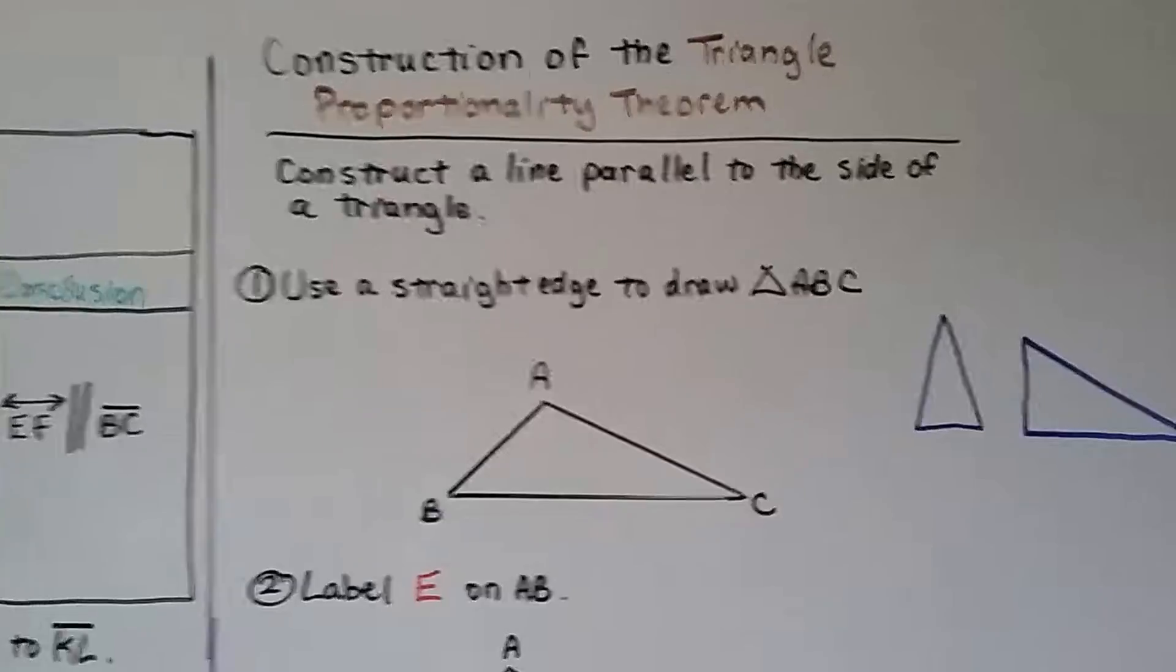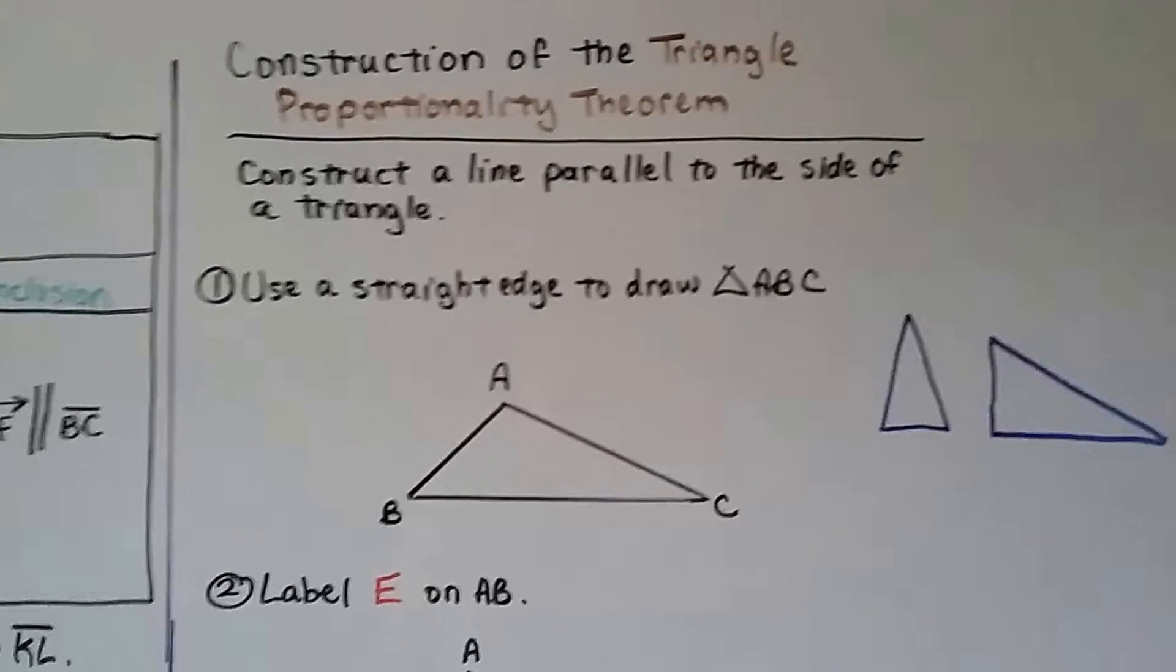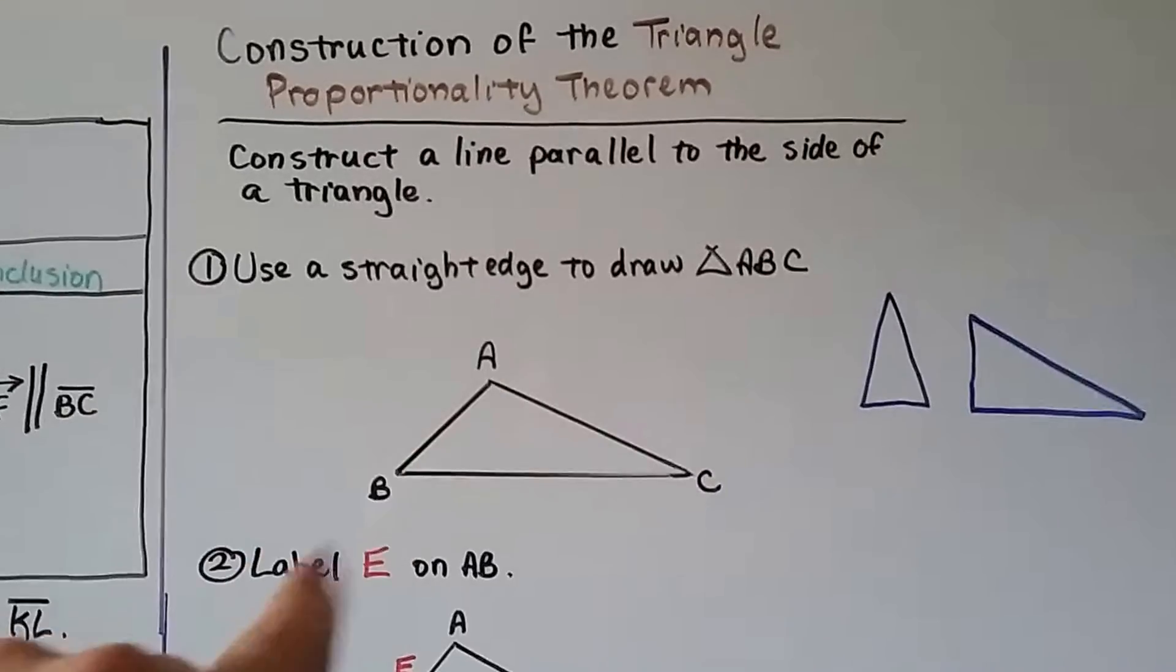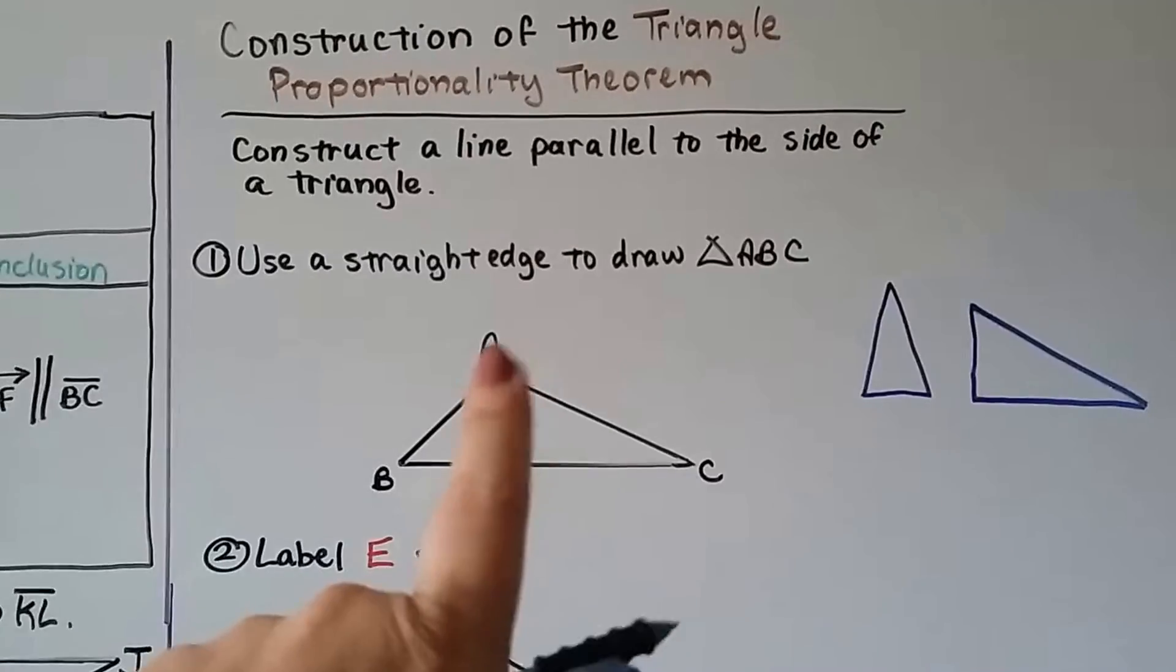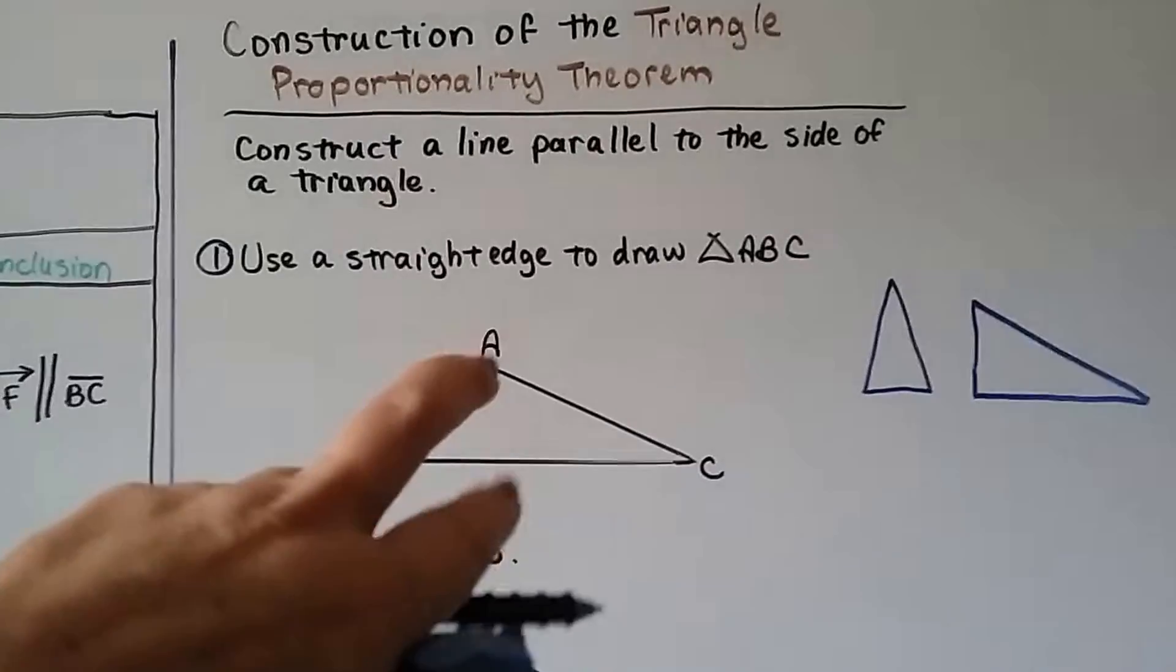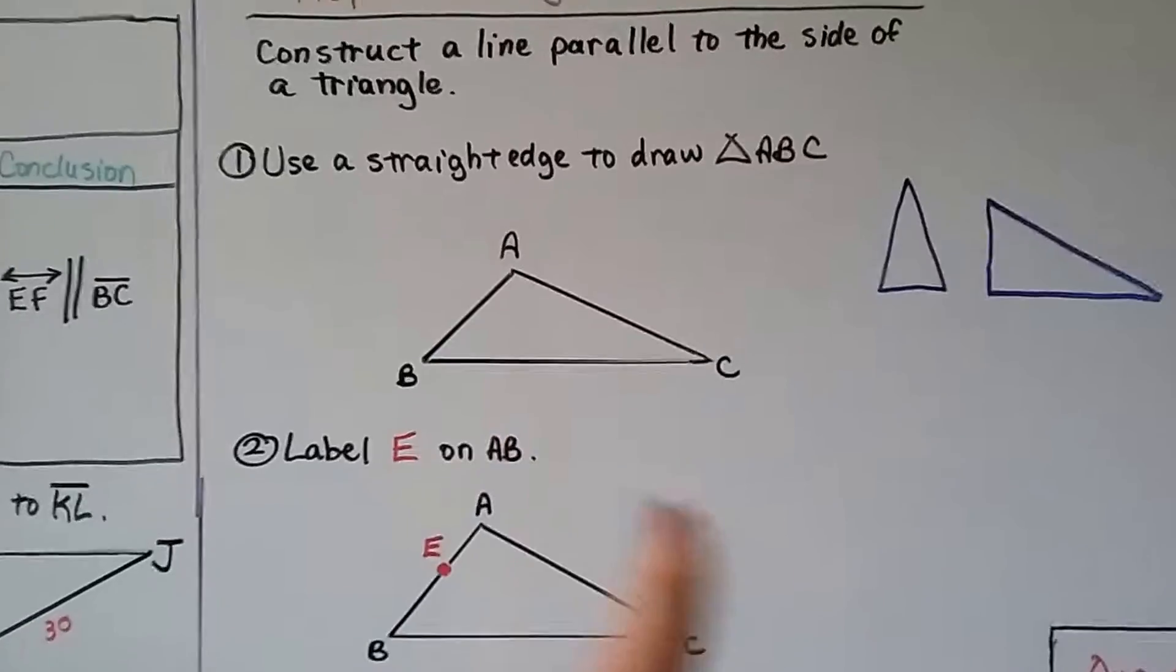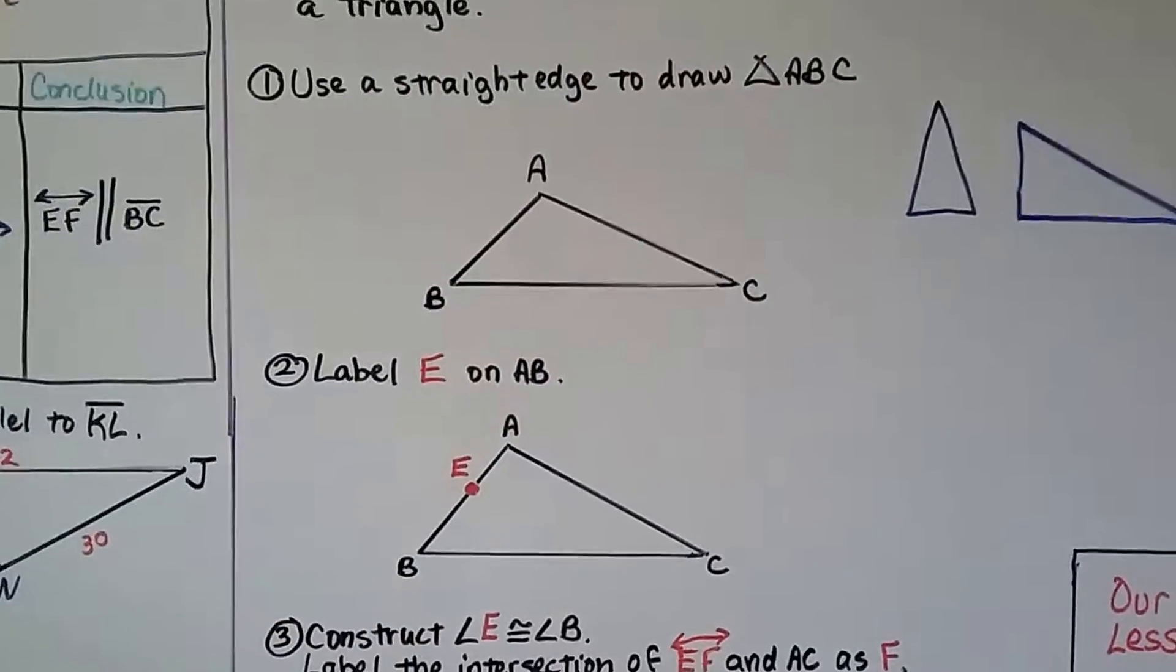This is construction of the triangle proportionality theorem. We're going to construct a line parallel to the side of a triangle. So we're going to use a straight edge first to draw a triangle ABC. And actually, you'd be better off if you made a taller triangle. It was a little hard for me because I made this one kind of short. It didn't have a very high altitude. So you can draw any triangle you want, but my advice is when you do this the first time, try drawing a taller triangle because it'll be easier.